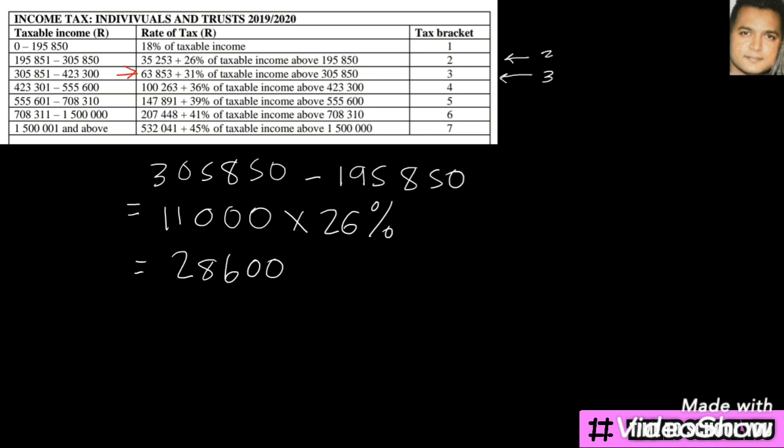We look at the initial amount of 35,253 that's at the beginning of tax bracket two for the rate of taxes, and we add this on.